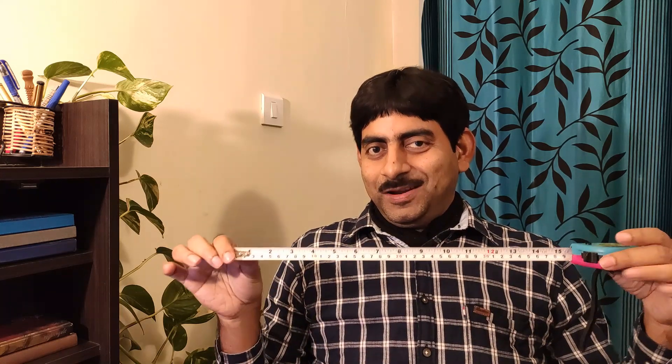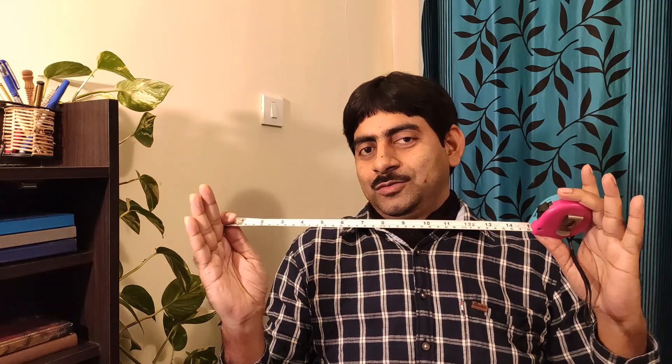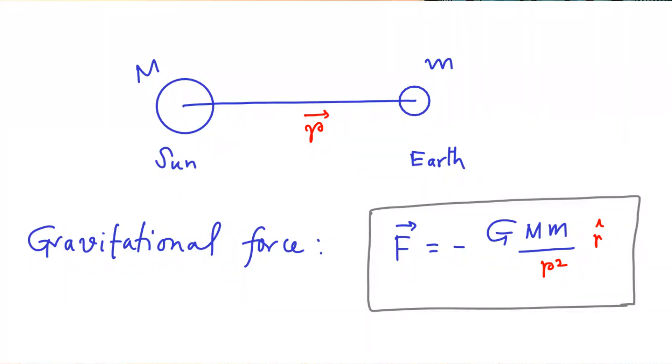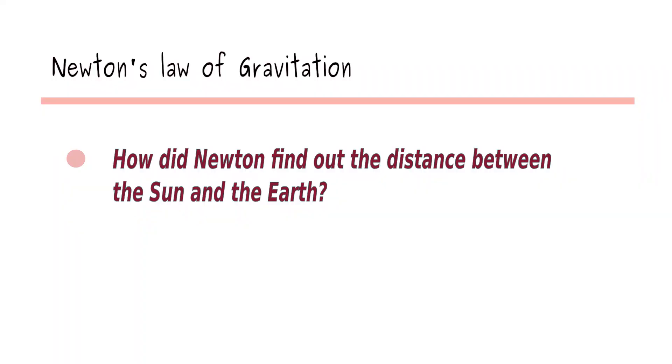What is the distance between my two hands? You may answer: about half a meter. How do you measure this distance? The answer is simple — just take a measuring tape and measure the distance between my two hands. But how do you measure the distance between the Sun and the Earth? Would you be able to use a measuring tape? No. Then how did Newton figure it out? Clearly, we need a measuring scale of astronomical size.